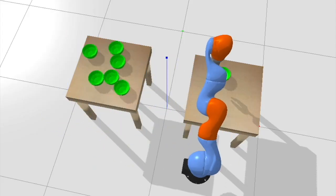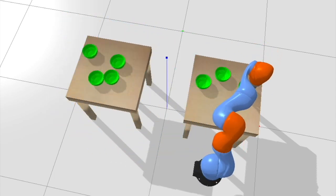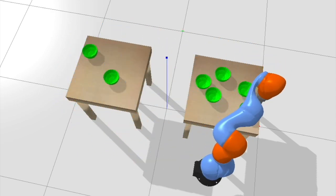The remainder of this video shows example executions of some of our evaluation tasks using the alternating descent learner. The robot's goal is to move all objects from one table to another.